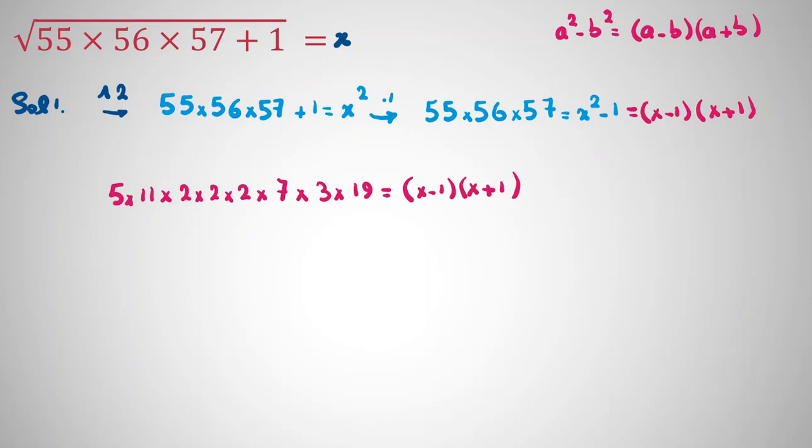Look, x minus 1 and x plus 1, both of them are odd or both of them are even. If both of them be odd, because if the first one is odd, means x is even. If x is even, both of them are odd and it's contradiction. Because here we have 2 times 2 times 2, left-hand side is even. So both parts should be even.